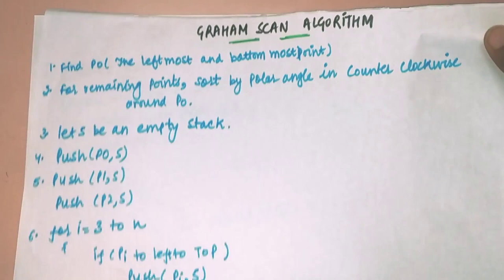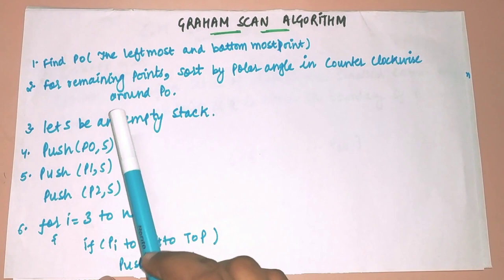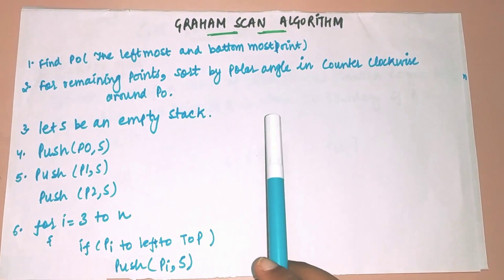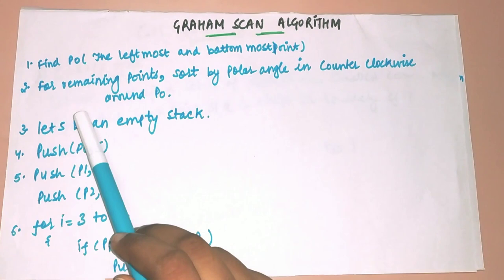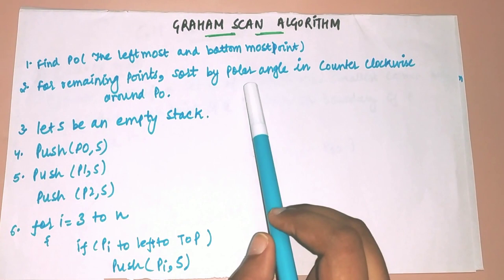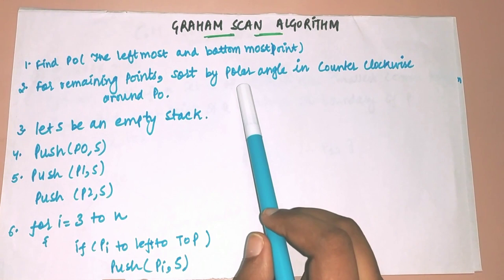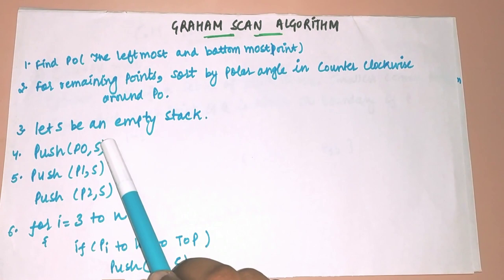Now we have to find the convex hull using the Graham Scan method. The steps are: Step 1 — find p0, which is the leftmost and bottommost point. Step 2 — for the remaining points, sort them by the polar angle in counterclockwise direction around p0, making p0 our x-axis. Step 3 — take an empty stack S.